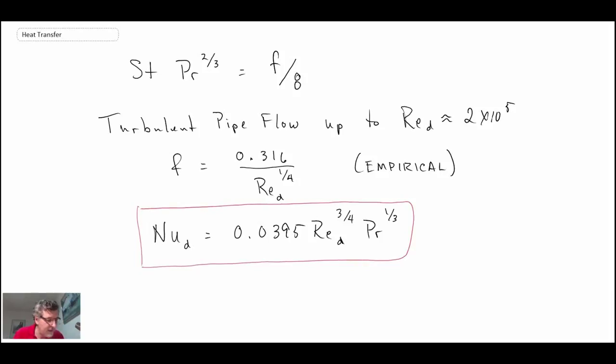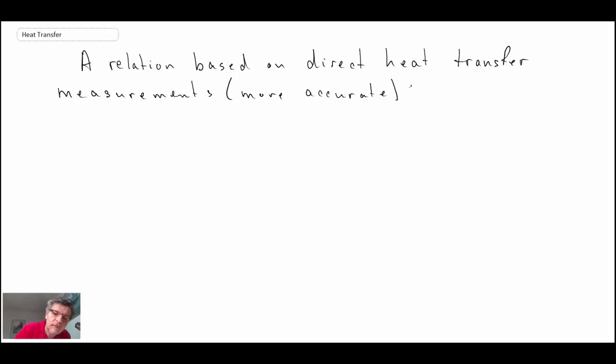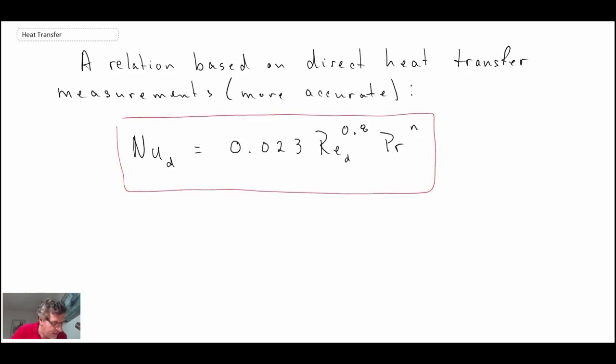Now what people have done is they've taken this expression and they've used it or tested it out to see how well it matches heat transfer data. And it turns out that it's good but it's not perfect. And so people have used that functional form and have fine tuned it to come up with a better expression for the Nusselt number. So taking that basic functional form for the Nusselt number and using direct heat transfer measurements results in the following expression for the Nusselt number based on diameter. This expression is referred to as being the Dittus-Boelter equation.